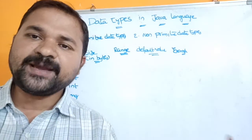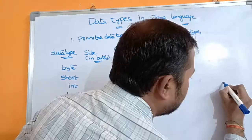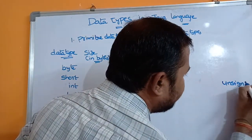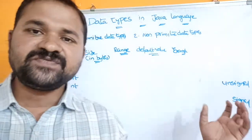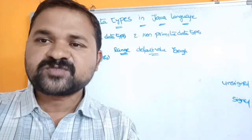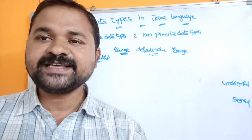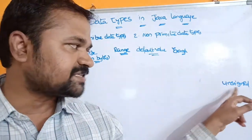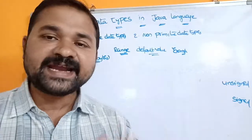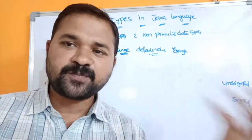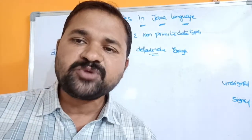There are mainly two types of data types: unsigned data type and signed data type. Unsigned means there is no sign — if there is no sign, the default sign is positive. So an unsigned data type allows us to store only positive values. Whereas a signed data type allows us to store both positive and negative numbers.